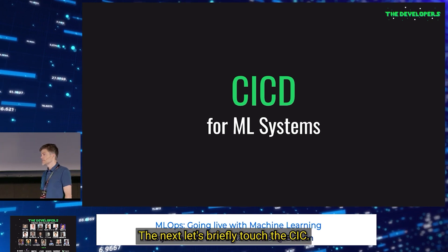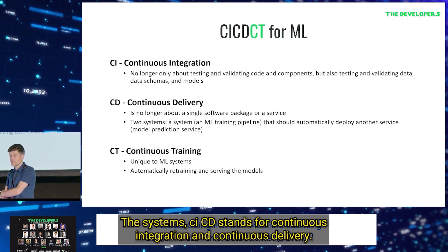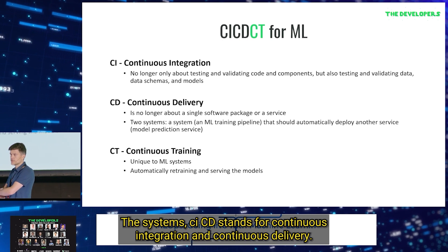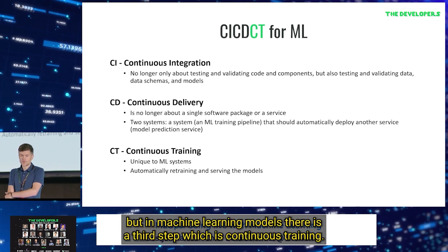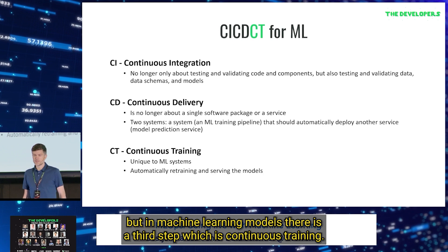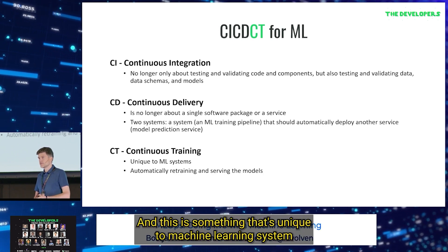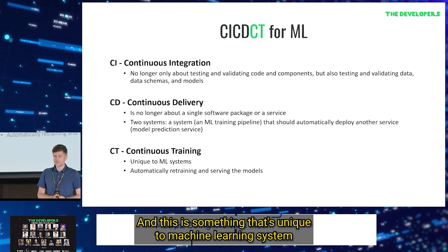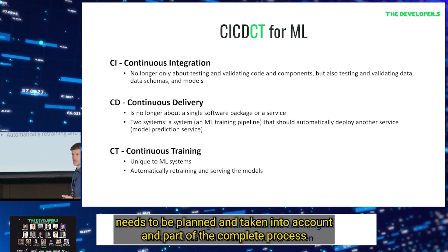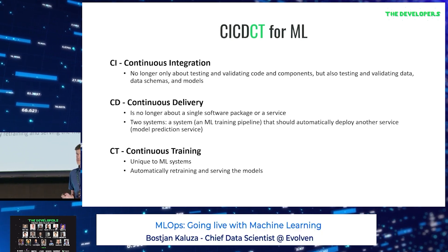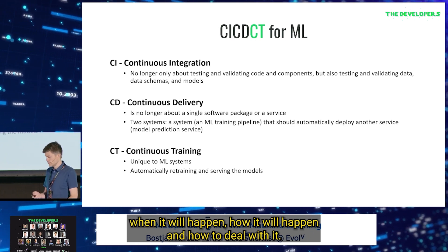Next, let's briefly touch CI/CD systems. CI/CD stands for Continuous Integration and Continuous Delivery. But in machine learning models there is a third step: continuous training. This is unique to machine learning systems and needs to be planned, taken into account, and made part of the complete process — when it will happen, how it will happen, and how to deal with it.